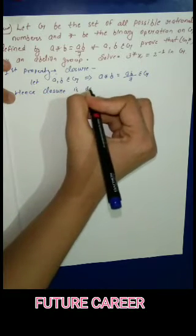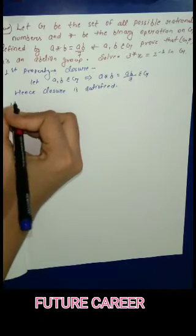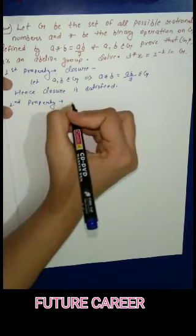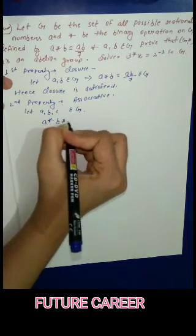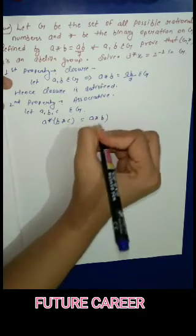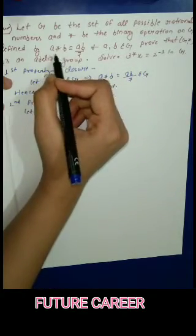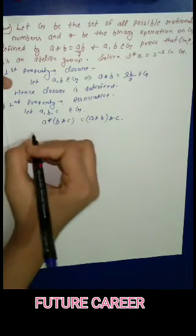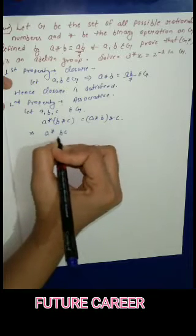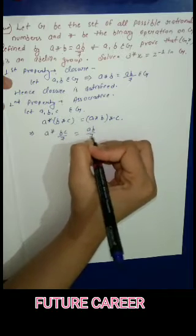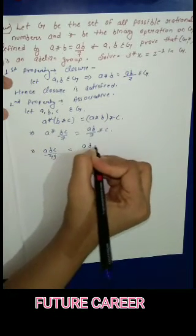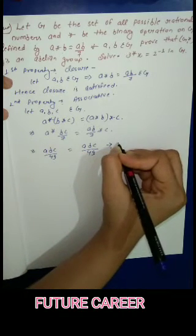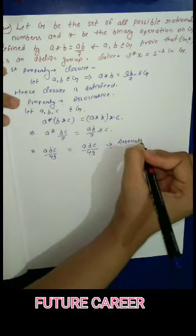Second property — Associativity: let a, b, c belong to G. Then (a★b)★c = a★(b★c). Applying the star property: left side gives (ab/7)★c = abc/49, and right side gives a★(bc/7) = abc/49. Since LHS = RHS, associativity is satisfied.